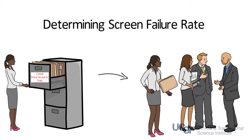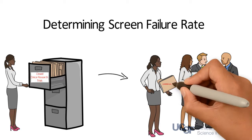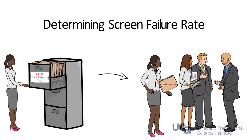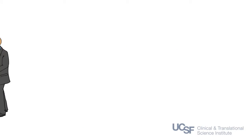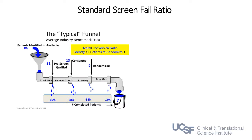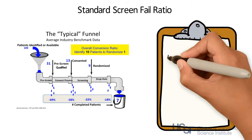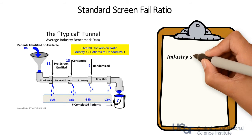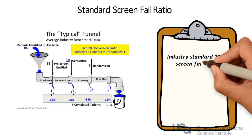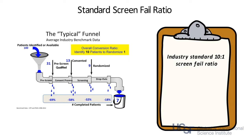Understanding these numbers will help you estimate the ratio of interested to enrolled participants. If you don't have access to prior study campaigns, you can use a 10 to 1 ratio as a starting point. If your study has positive or negative factors influencing your accrual rate, you can also adjust your rate accordingly.